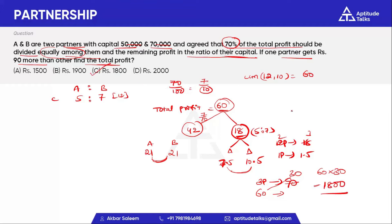We have the solution. We shared 70% equally: 42 equals 21 plus 21. The remaining amount is 18. We divide this 18 in a 5 to 7 ratio.